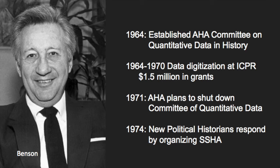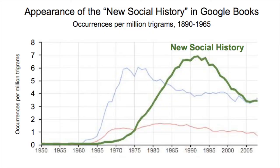When the AHA decided to shut down the Committee on Quantification in 1971, Benson and seven other new political historians organized the Social Science History Association at a meeting at ICPSR in Ann Arbor. Benson became the first president of the new association. Given his view that qualitative history is haphazard quotation, and given that SSHA was established because the AHA shut down its committee on quantitative data, you might assume the new association would be militantly quantitative. You would assume wrong — in fact, the SSHA welcomed qualitative approaches from the very beginning.